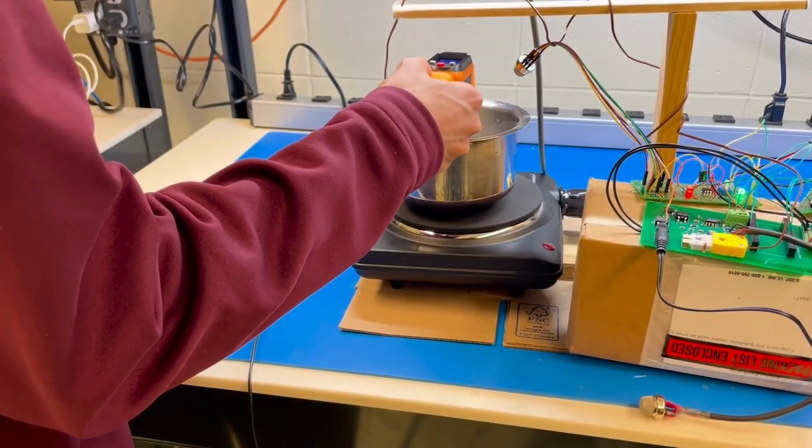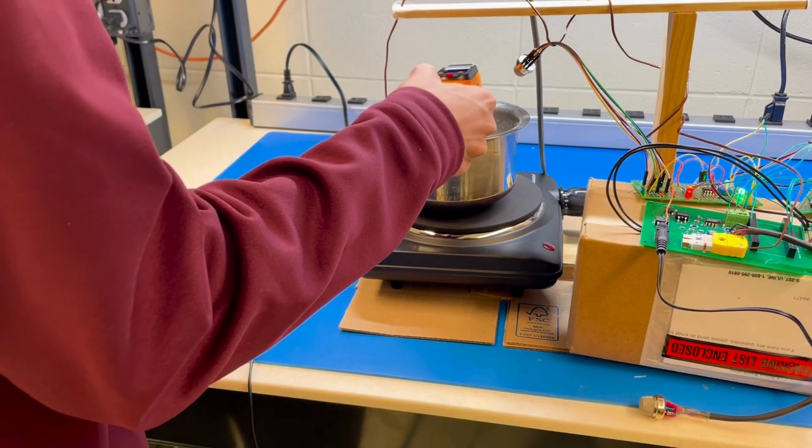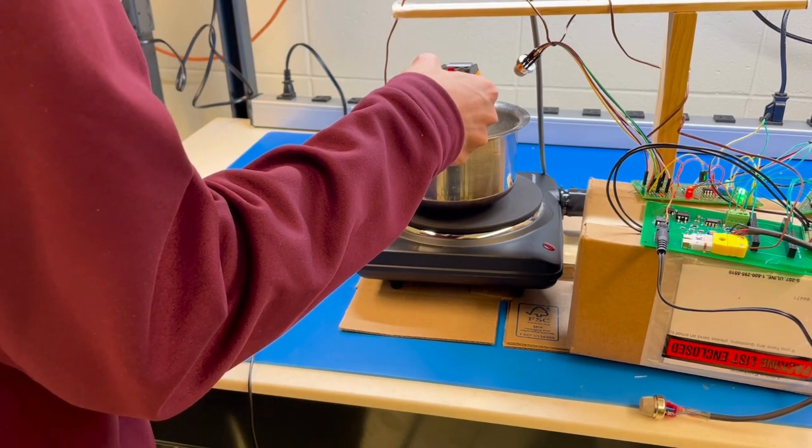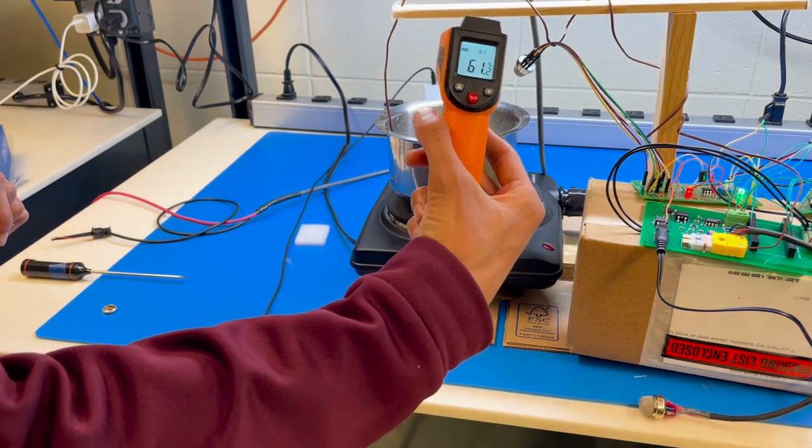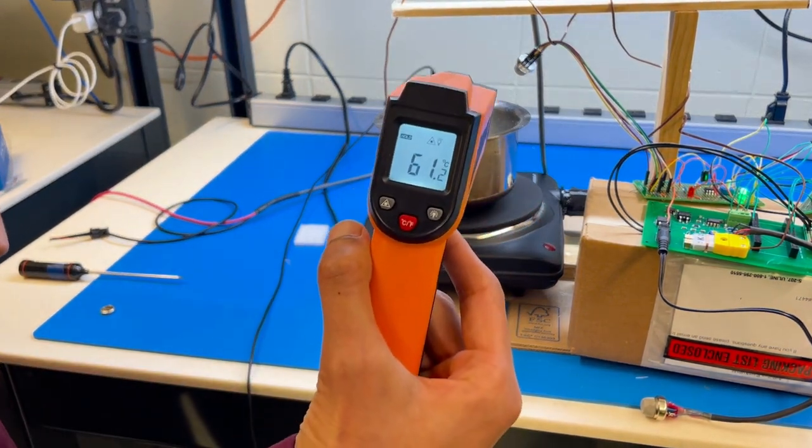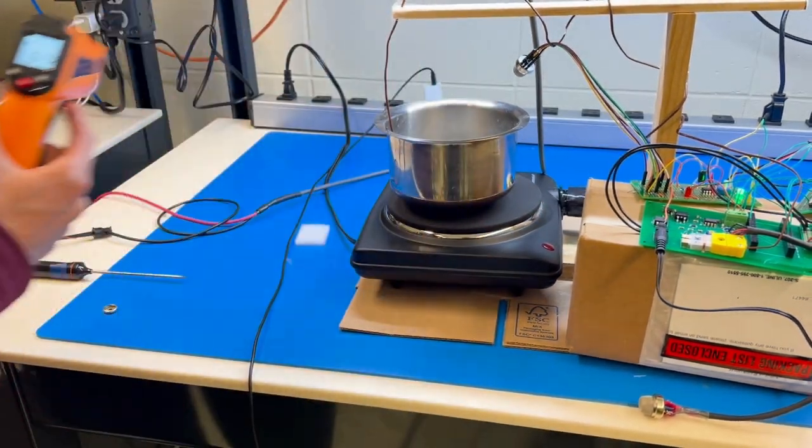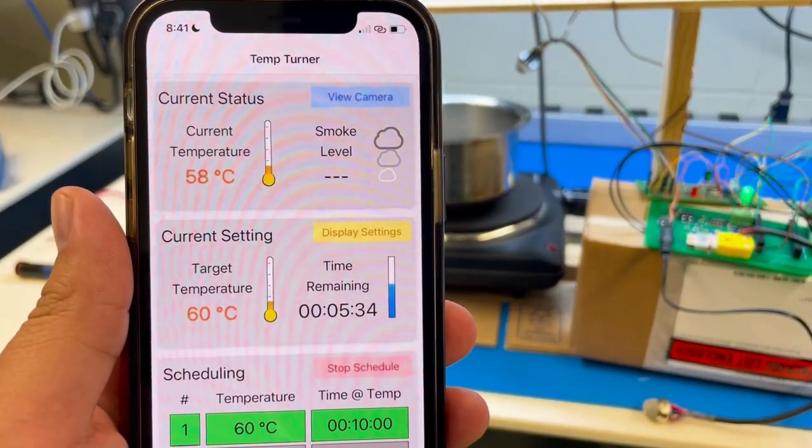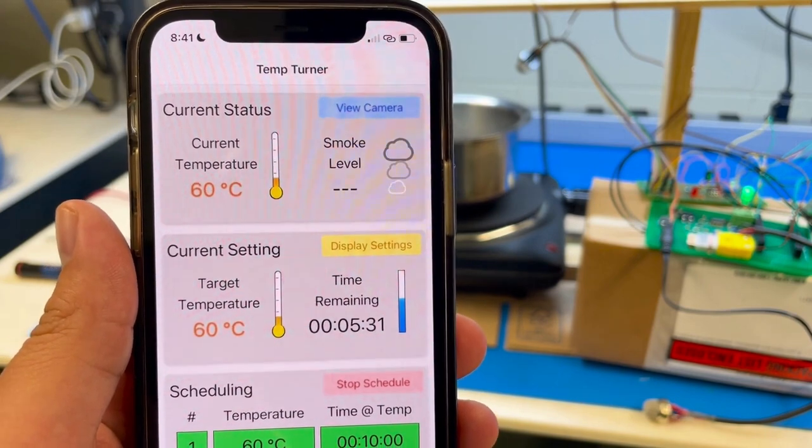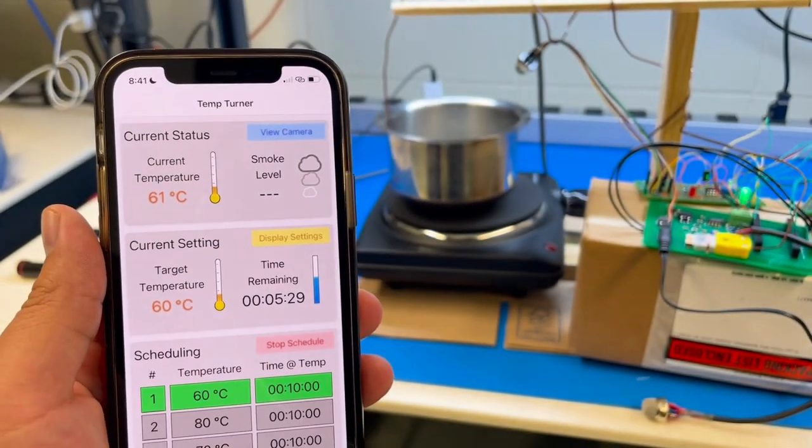Now let's check in on the water as it approaches 60 degrees Celsius. The IR thermometer shows a reading of 61 degrees Celsius. Let's see what the app shows now. The app also shows 60 degrees Celsius, as you just saw.